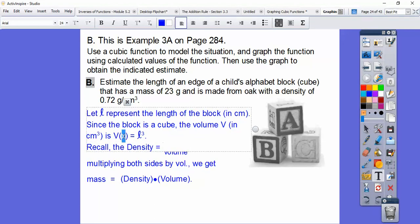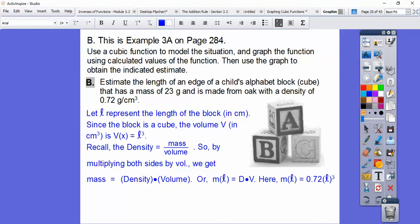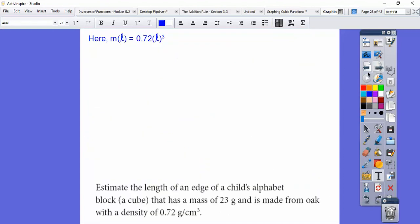Remember mass is - I'm sorry, density is mass divided by volume. So if we multiply both sides by volume, it gets rid of the volume, and we get mass equals volume times density. That's what this says. Or the mass with respect to the length is equal to the density times volume. So let's go ahead and graph this function. We're going to make a table of values. So here's the question down here: we're estimating the length of the edge. So here's my f(x) equals something x cubed. So this is going to graph a cubic equation.